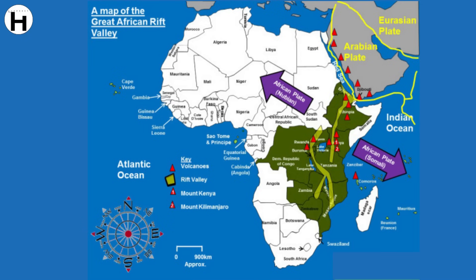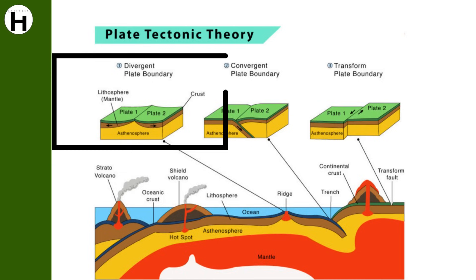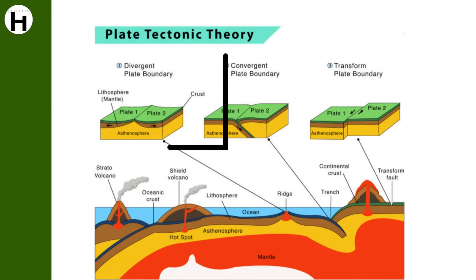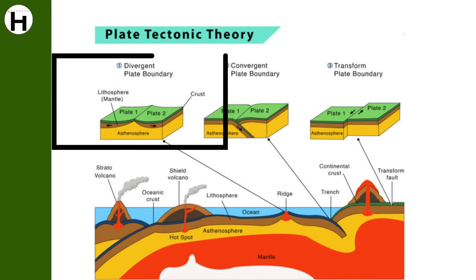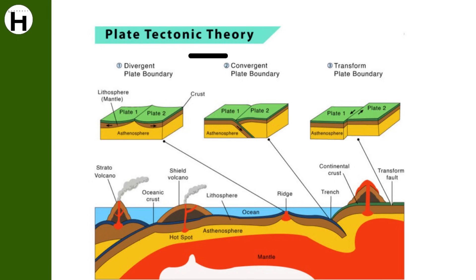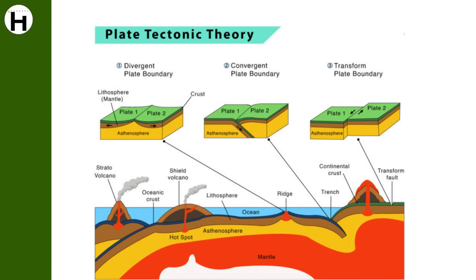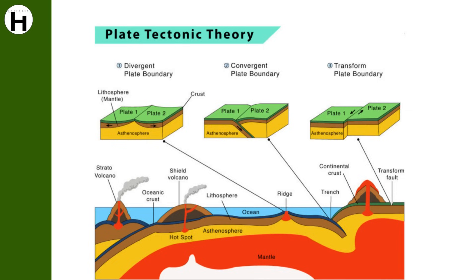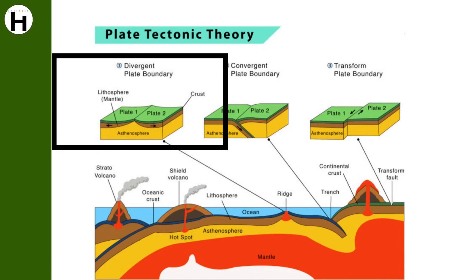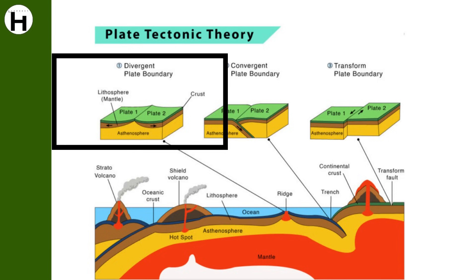The rift stretches for more than 3,000 km from Zimbabwe to the Gulf of Aden. The Somalian and Nubian plates are experiencing divergence here. A divergent boundary occurs when two tectonic plates move away from each other. Mid-oceanic ridges, rift valleys, and fissure volcanoes are features of divergent boundaries. These boundaries can also develop within a continent, resulting in a continental rift valley, such as the East African Rift.